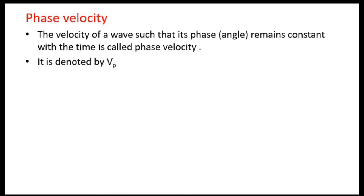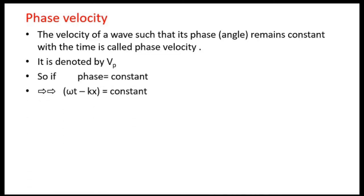The velocity of a wave such that its phase or angle remains constant with time is called the phase velocity, denoted by vp. If the phase remains constant, it means the quantity in the bracket (ωt − kx) remains constant.